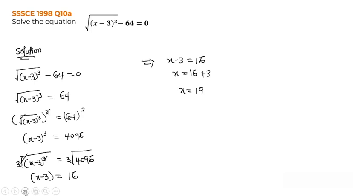But then let's verify and see whether this answer holds true. If our x equals 19 it means when we substitute it back into this expression it should give us 0. Or if we substitute it into this side of the equation, it should give us 64. So let's look at that.